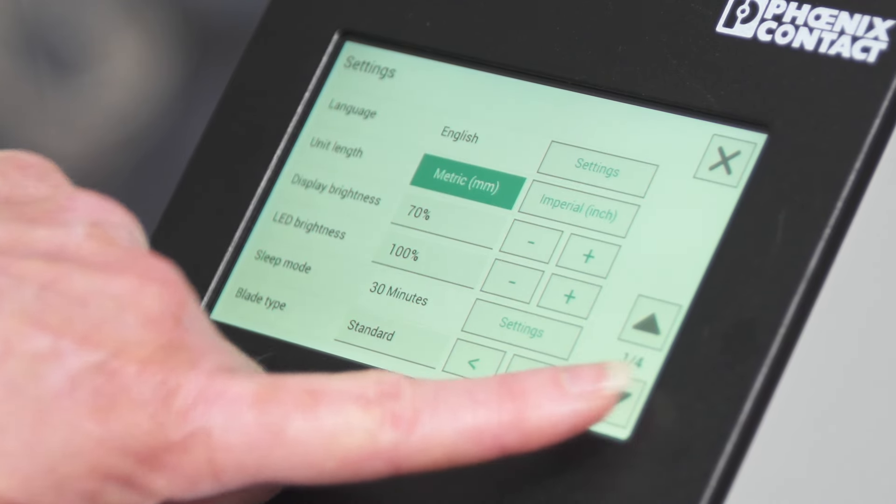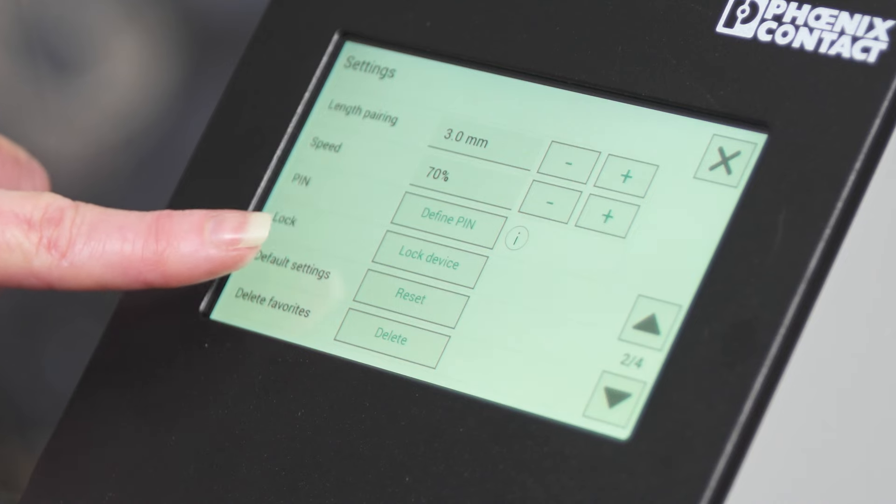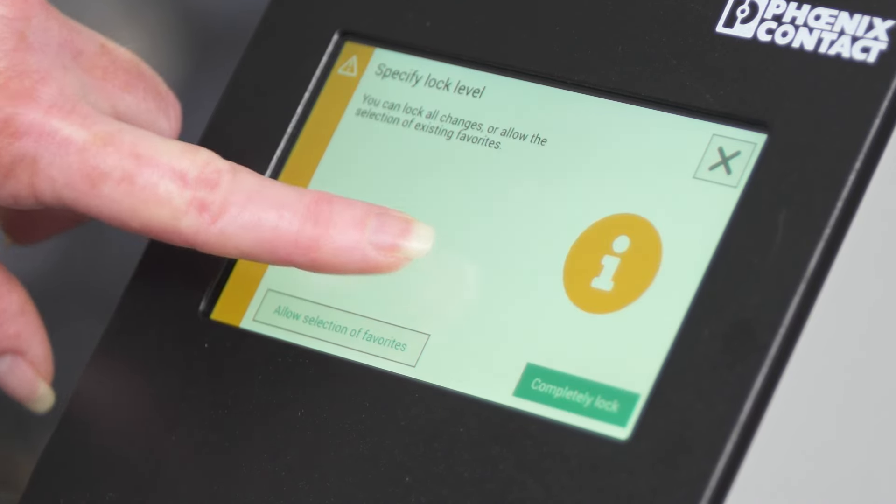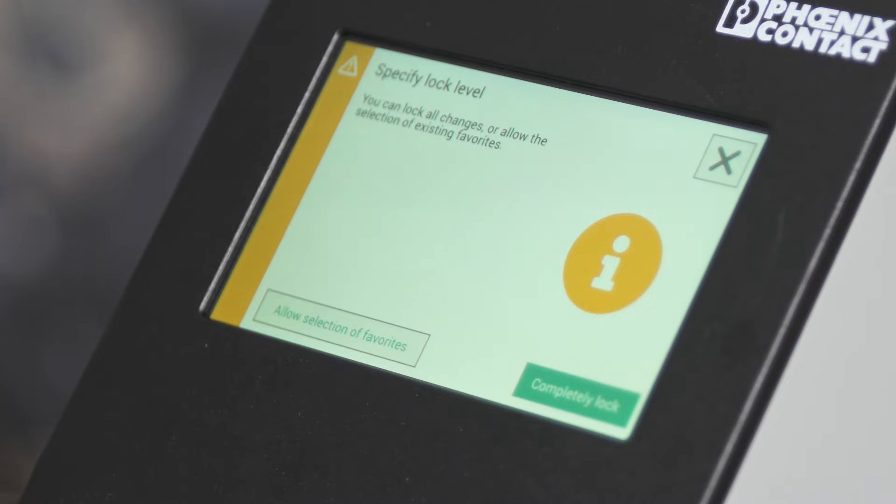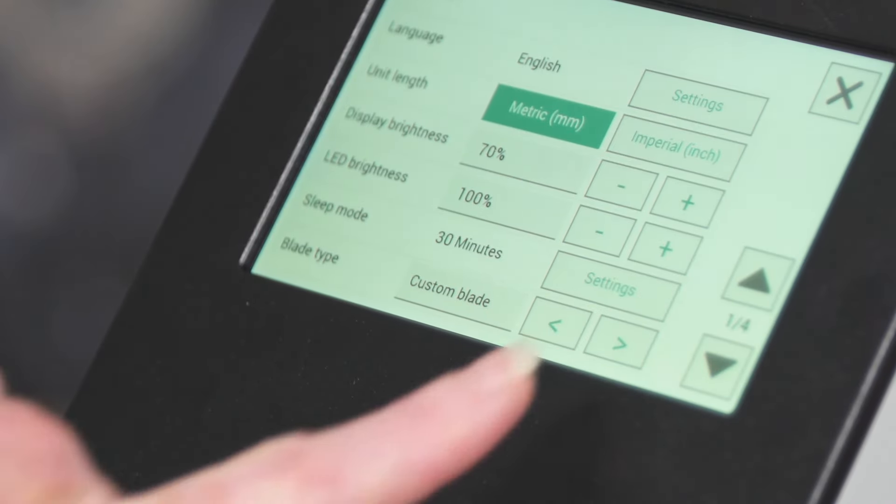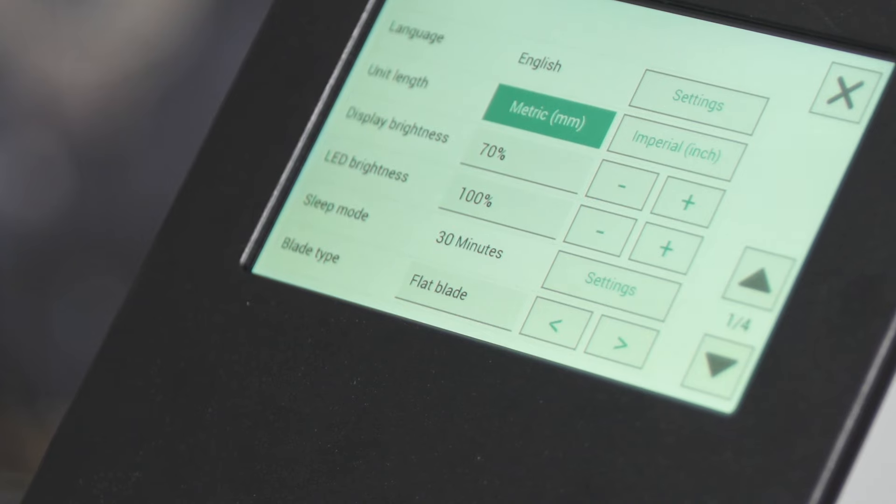You can scroll down for additional settings in addition to locking the machine so accidental changes cannot be made. The device comes with a standard V blade, but flat and custom blades are available for different wire insulation types.